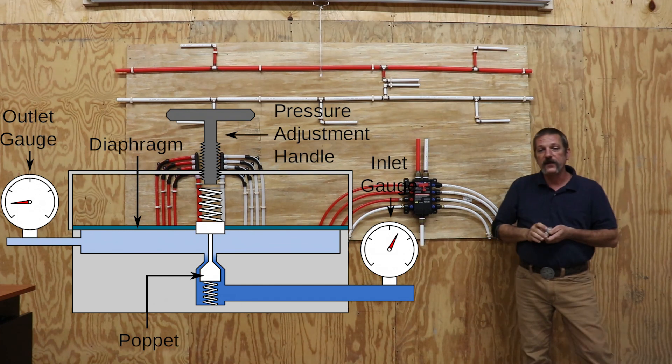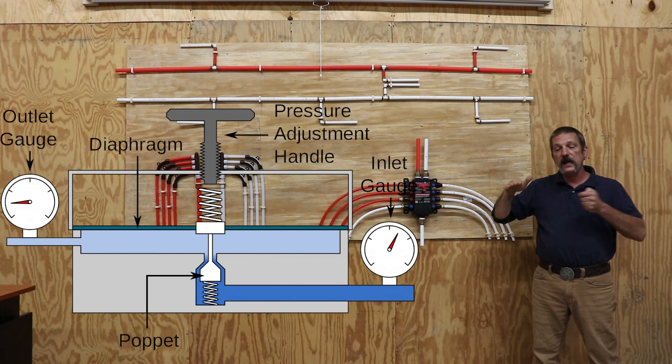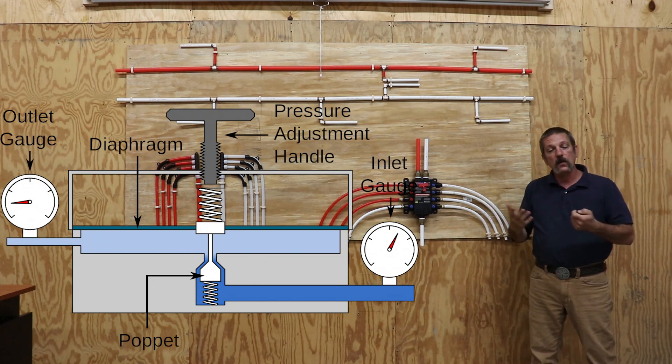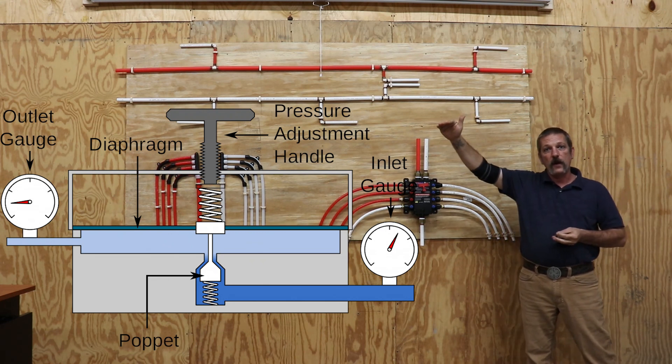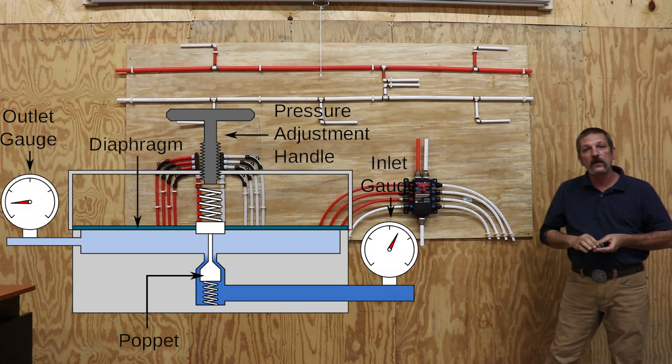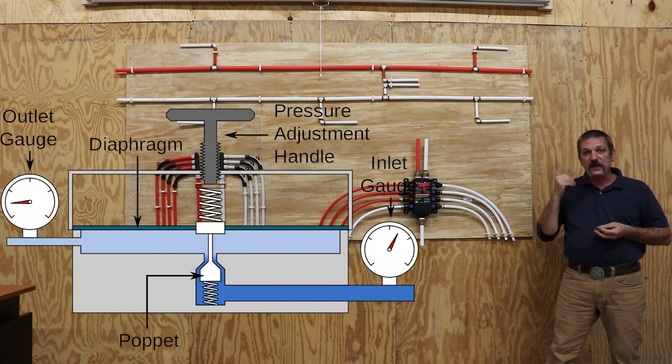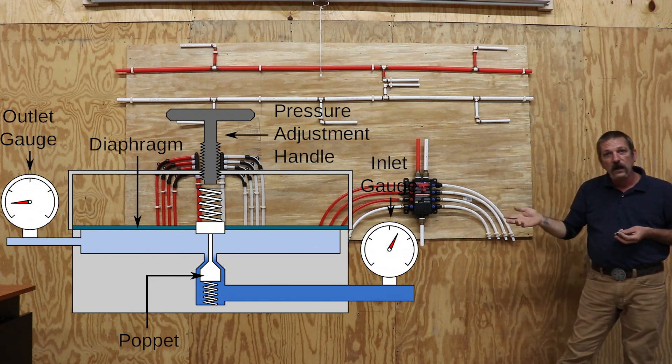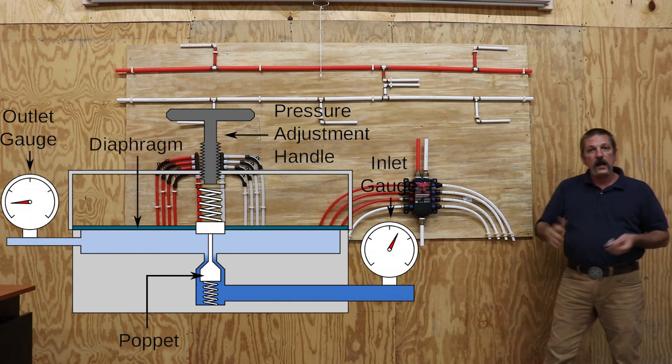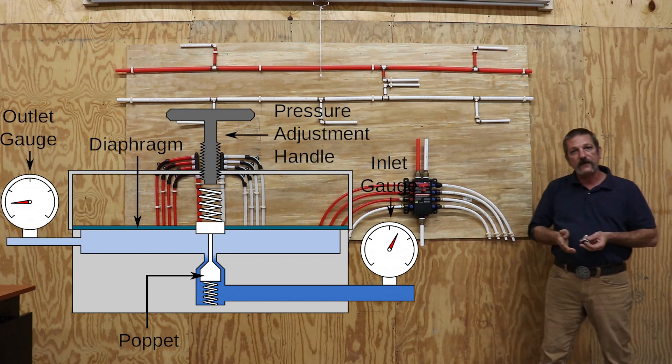Now what happens is that spring is pushing down on that diaphragm. Say it's never had any water in it and you're turning the water onto it for the first time. There's not going to be any pressure on that diaphragm. That spring is pushing it all the way down so that the poppet valve is open. Now as soon as the water comes through that poppet valve and it inflates that diaphragm it's going to balance out on that spring. And when that pressure balances out with the pressure on that spring it will close that poppet valve.